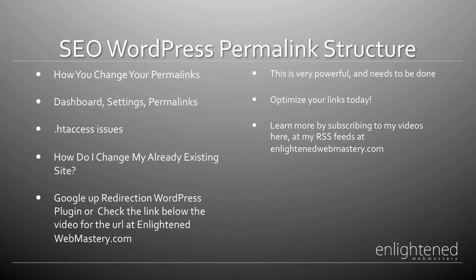Once you've decided on the best permalink structure for your situation, implement it today. Go to your WordPress dashboard, under Settings, choose Permalinks, and insert your custom permalink structure. You may get a .htaccess issue, but it's simple to resolve. Open a text editor such as Notepad, gedit, or TextEdit, and copy and paste the code it gives you. Save the file as htaccess — without a dot — then transfer it to your server via FTP. Once uploaded, rename it to .htaccess and your blog will work and function correctly.